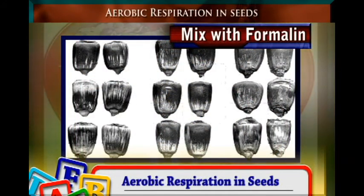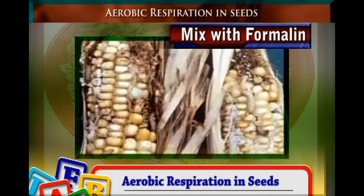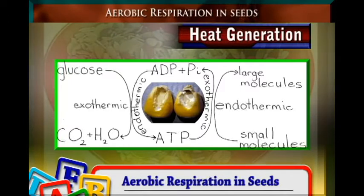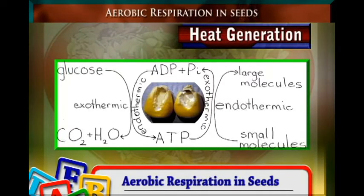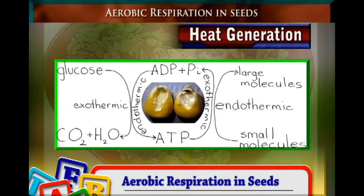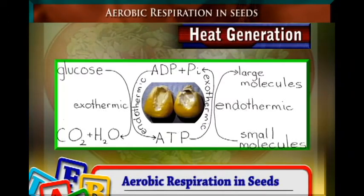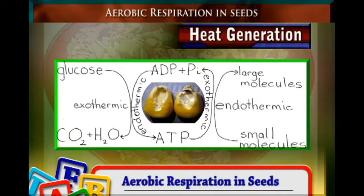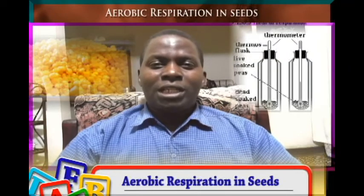The purpose of treating the boiled maize with formalin is to prevent bacterial infection. If bacteria infect the boiled maize, they will break down the nutrients and generate heat, which would confuse our results — we might measure bacterial activity instead of aerobic respiration. This is why the control is important. Thank you, and stay with us as we discuss anaerobic respiration.